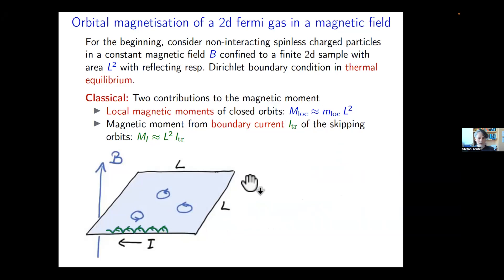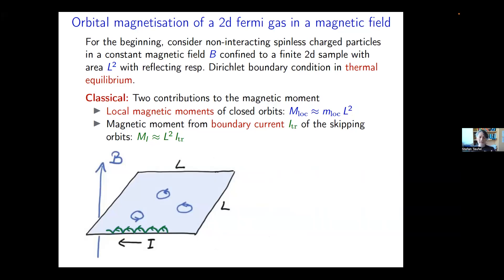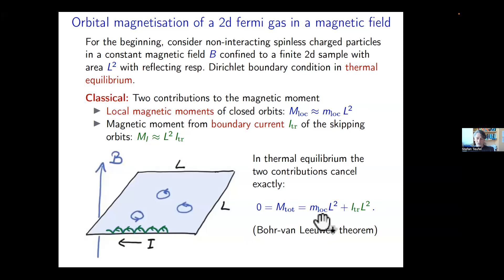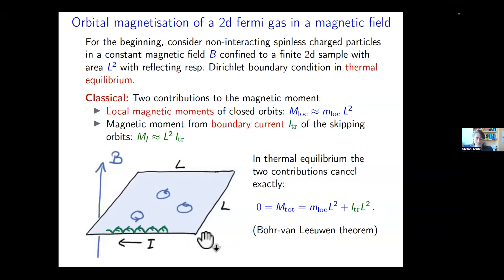The magnetic moment from the boundary current is proportional to the current times the enclosed area. However, when we sum the two contributions — local magnetic moments and the boundary current contribution — they add up to zero. This is the content of the Bohr–van Leeuwen theorem: a classical system in thermal equilibrium has zero magnetization. In this simple example you can check that these two contributions cancel exactly.